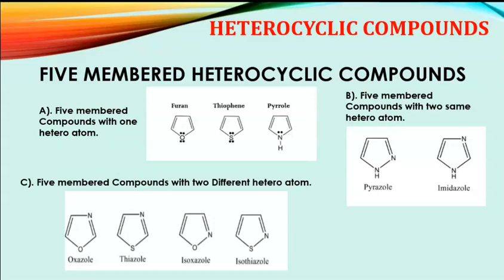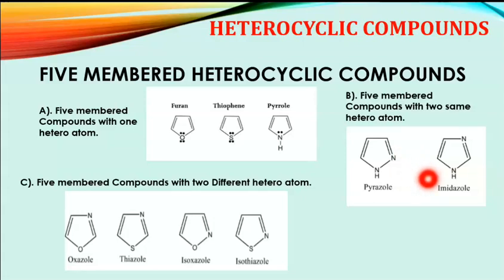The second classification of five-member heterocyclic compounds is five-member compounds with two same heteroatoms. Examples are pyrazole and imidazole. Look at the structure of pyrazole — it contains two similar nitrogen atoms as heteroatoms. Similarly, imidazole also contains two similar heteroatoms, both nitrogen.